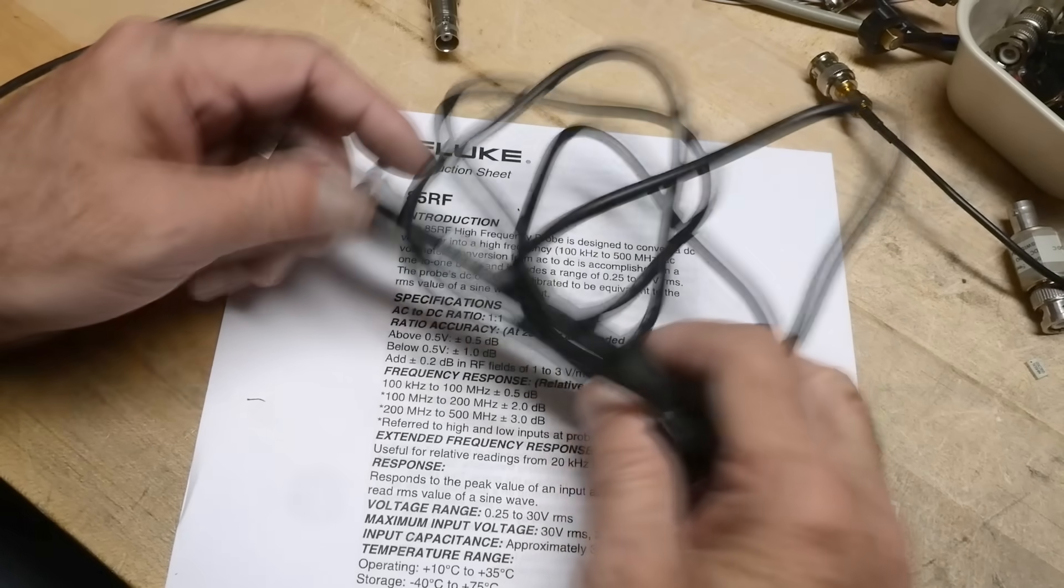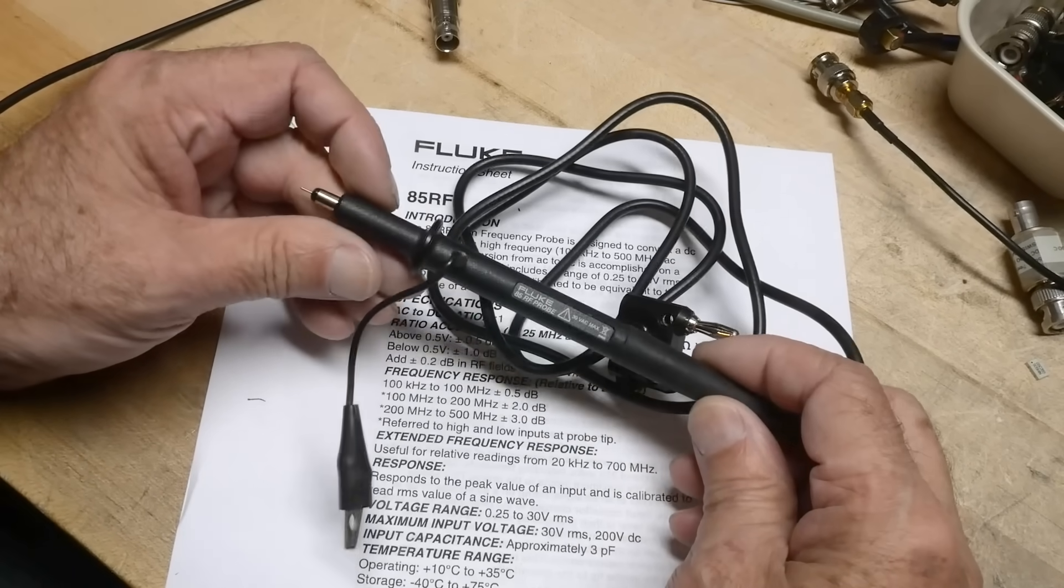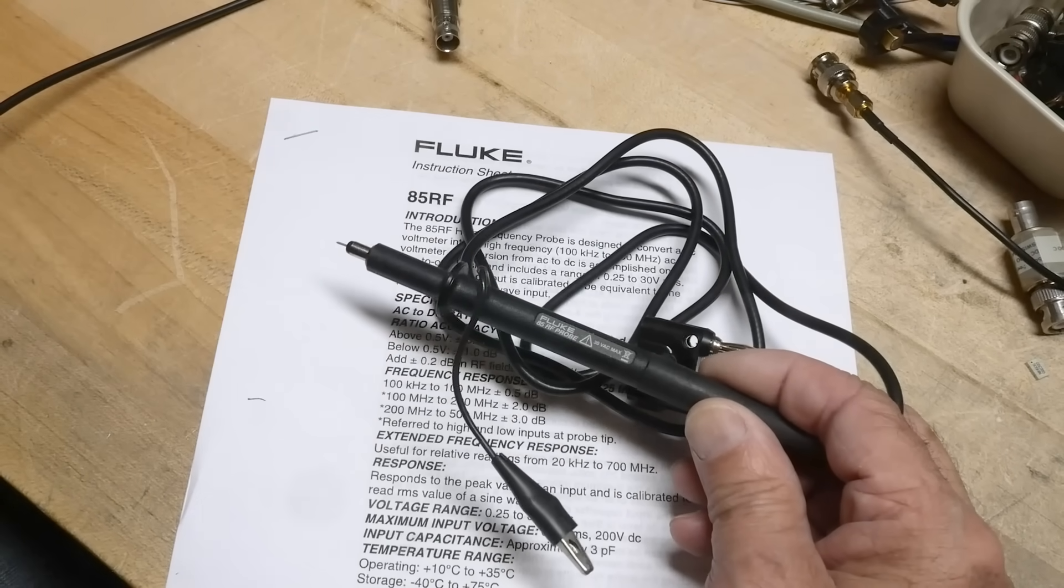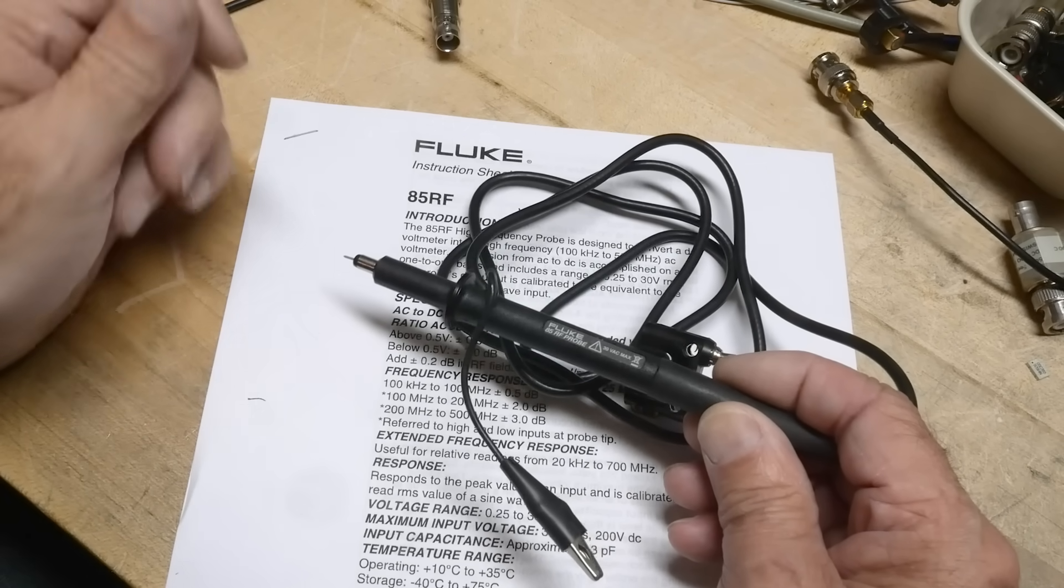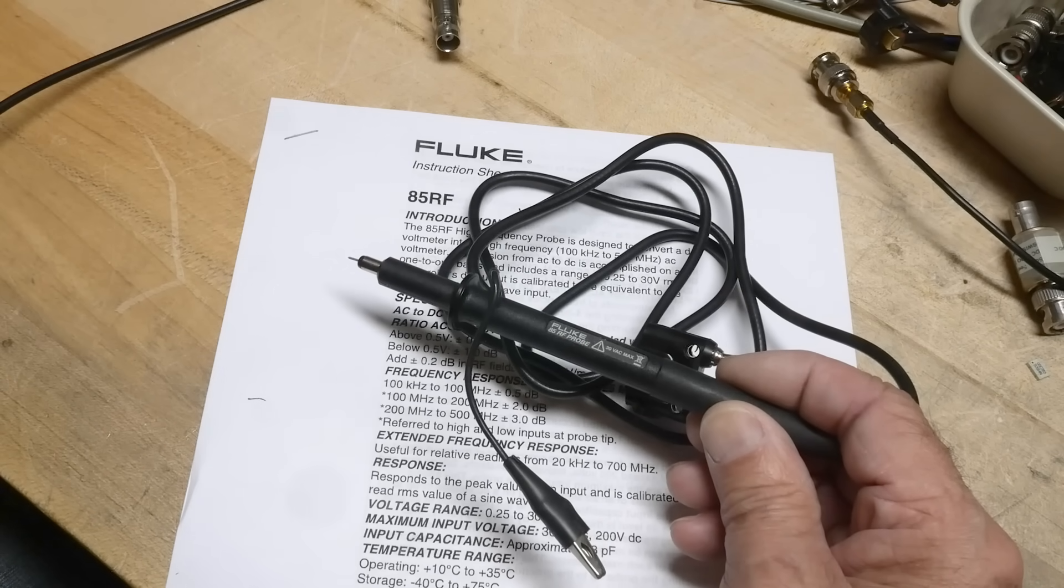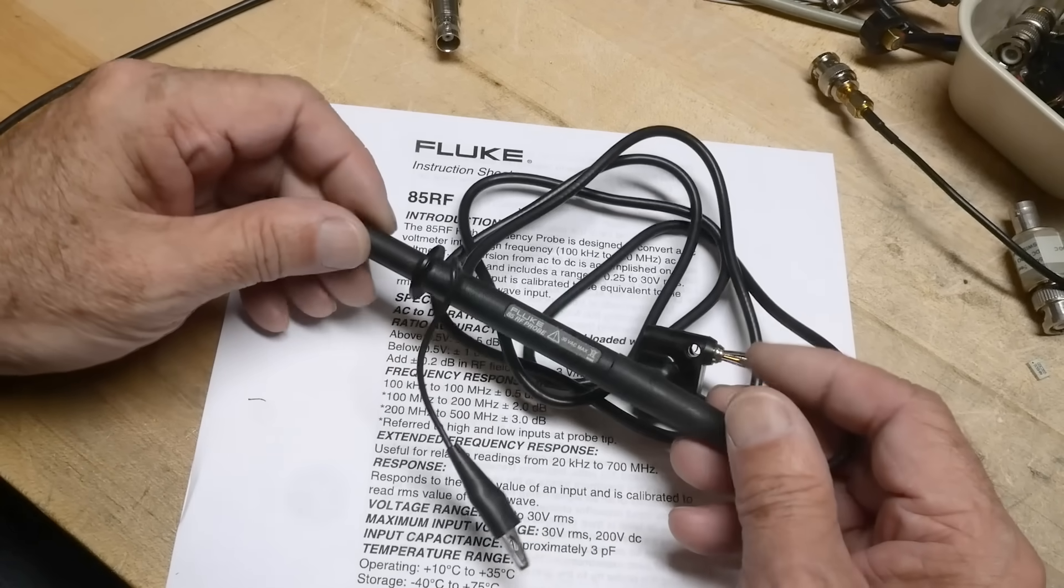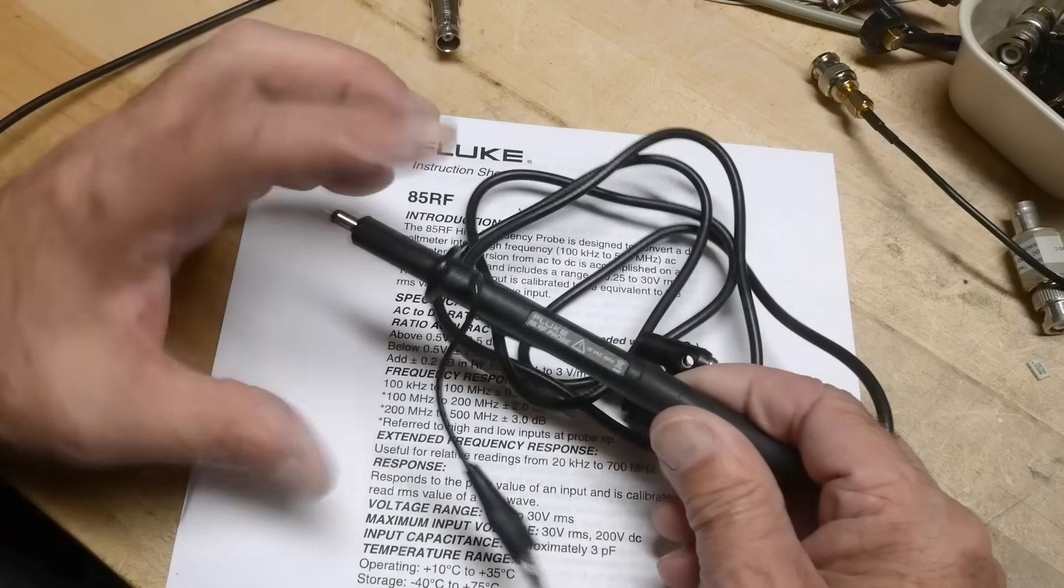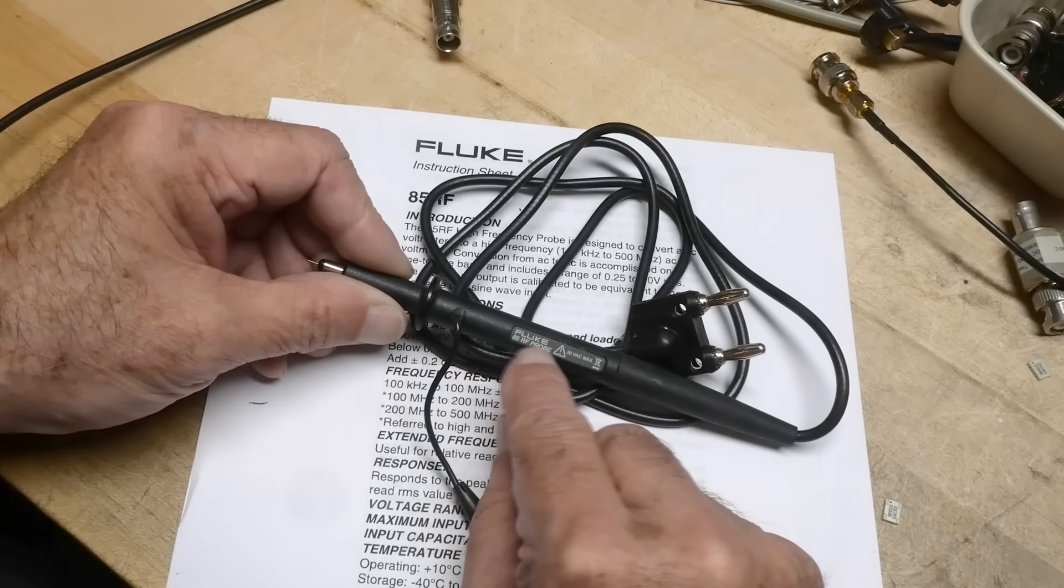All right, what's on the bench today? I was on eBay and I found this pretty cheap, so I figured I'd buy it. This is an RF probe. I was thinking about building my own RF probe because everybody and their brother has built one of these things, and there's a couple of varieties. I thought maybe I could build one that had multiple versions and multiple purposes all in one probe, which I haven't seen done before. Anyway, that's a different project. Today's project is a Fluke 85 RF probe.